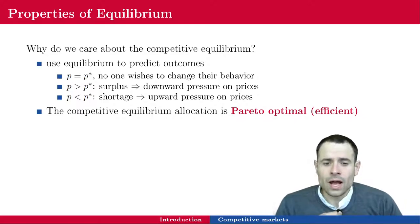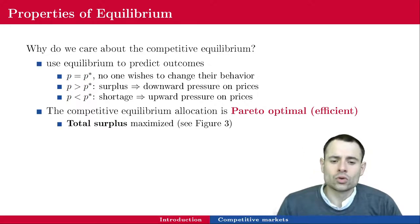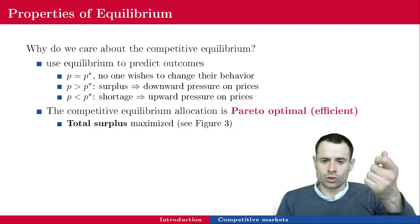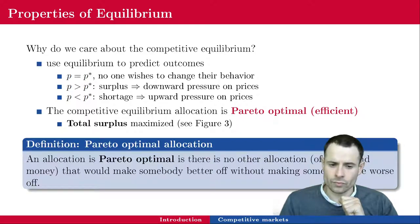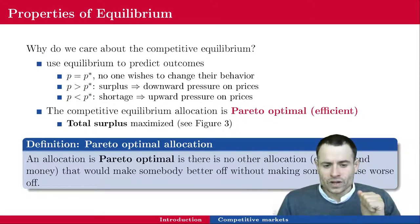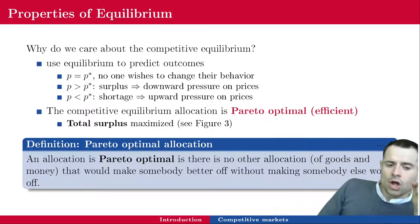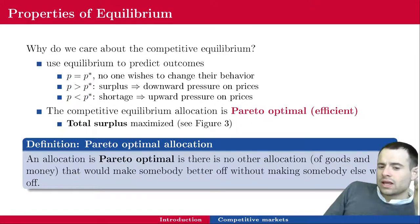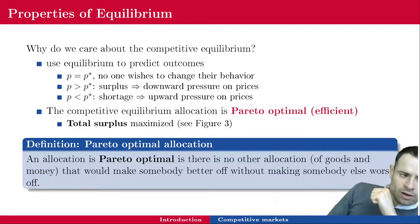The competitive equilibrium allocation is Pareto optimal, or Pareto efficient. Total surplus is maximized — the sum of the consumer and the producer surplus. An allocation is Pareto optimal if there is no other allocation of goods, services, money, time, or any other resources that will make somebody better off without making somebody else worse off.